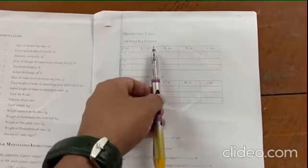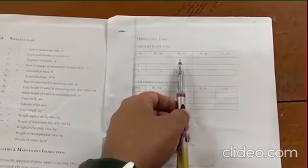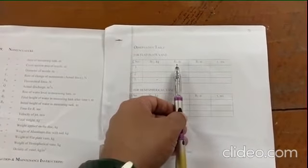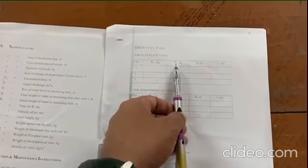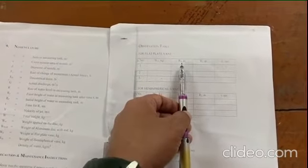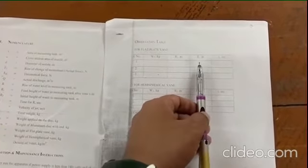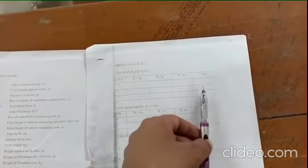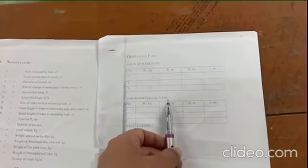This one is for flat vane. For different weights, we can find out the rise of water level represented as R, where R1 is the initial water level in the measuring tank and R2 is the height of water in the measuring tank after a particular time. Here is the considered time. The same table we have to repeat for hemispherical vane.